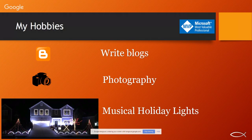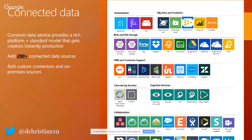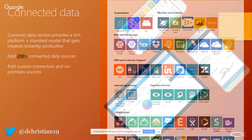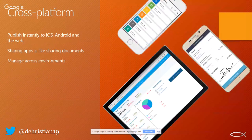Today's topic is a one-stop shop for social integration. One of the beauties of Power Apps is all the data connections available — over 200 different data connections right now, and that list grows fast. I focused on all the social media connections available. Another great thing about Power Apps is the whole concept of cross-platform: you can publish instantly to iOS, Android, or a web-based form.